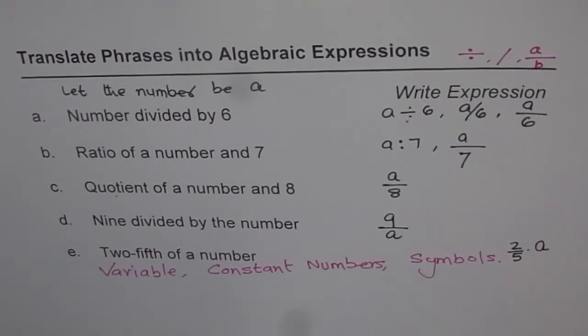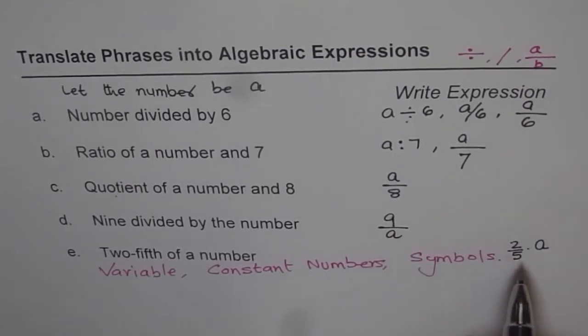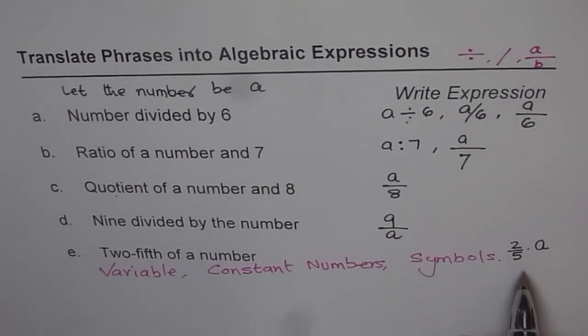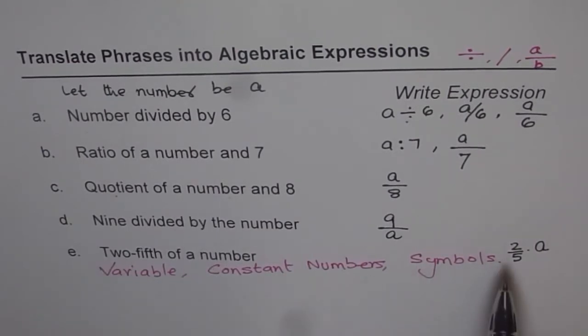So you can also see or read this as twice a divided by 5. So multiplication is kind of division. Or you can say division is also multiplication. So that is how we can write this phrase in the form of an algebraic expression.